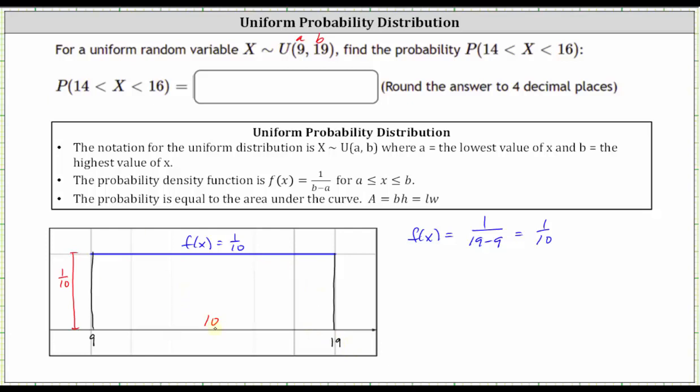Looking at this rectangle, notice how the base times the height or 10 times 1/10 is one. And now let's find the probability that X is greater than 14 and less than 16. 14 is here. 16 is here.